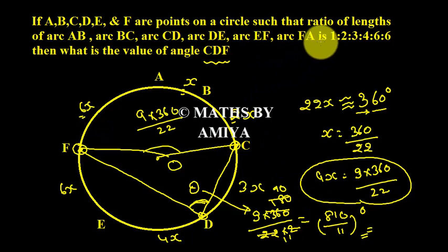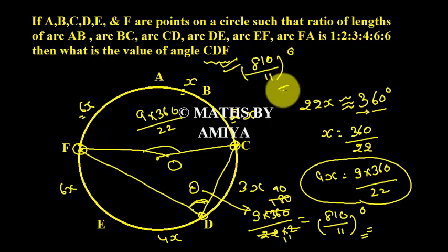So we converted arc into central angle, and the perimeter angle is half of central angle. We find our required value and our answer is 810 upon 11 degrees. I hope it is clear. Even if you have any doubt, feel free to ping me. Thank you and happy learning.